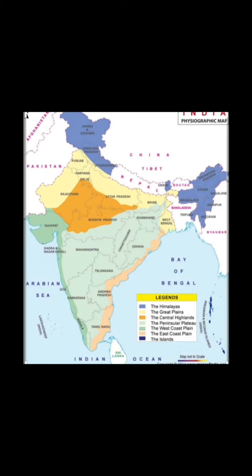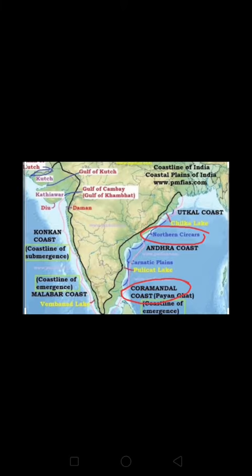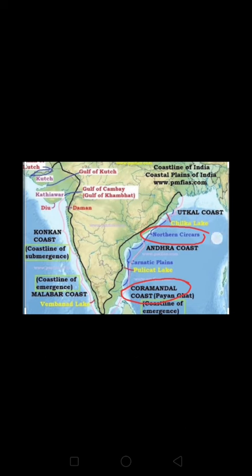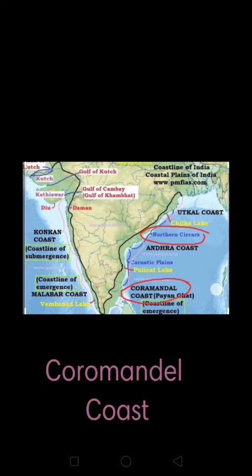The Eastern Coastal Plain lies between the Eastern Ghats and the Bay of Bengal. It is wider than the Western Coastal Plain and can be divided into two parts. The northern part is called the Northern Sarkars and the southern part is called the Coromandel Coast.